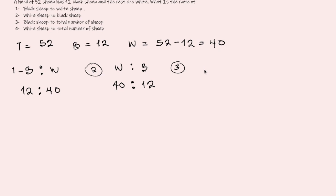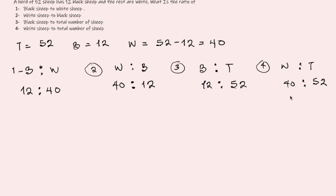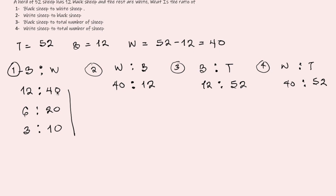The ratio of black sheep to total number of sheep is 12 to 52, and white sheep to total number of sheep is 40 to 52. We can reduce all of these, but leaving them unreduced is also acceptable. In an exam, you might not see 12 to 40 among the options — instead you might see 6 to 20 or 3 to 10, since 12÷2=6, 40÷2=20, 6÷2=3, 20÷2=10. All of these represent the same ratio.